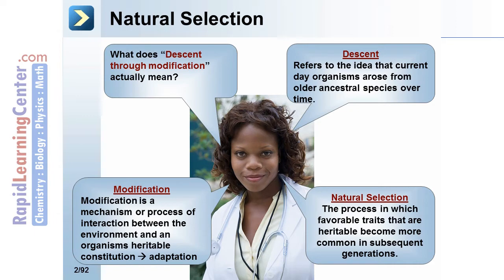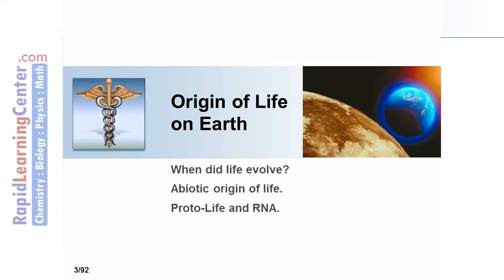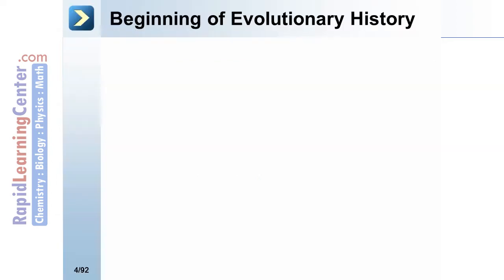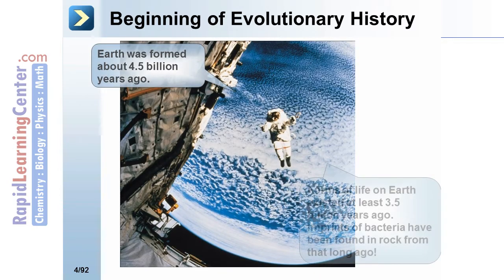In this segment we'll discuss when life evolved, the abiotic origin of life, protolife, and RNA. Earth was formed about four and a half billion years ago, and forms of life on Earth existed at least three and a half billion years ago. Imprints of bacteria have been found in rock from that long ago.